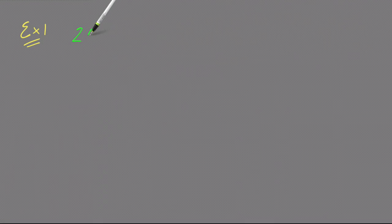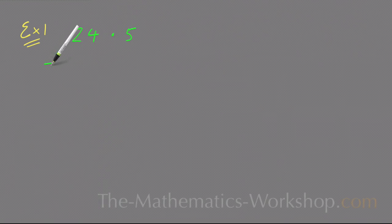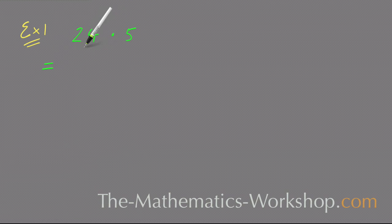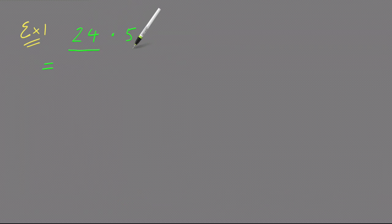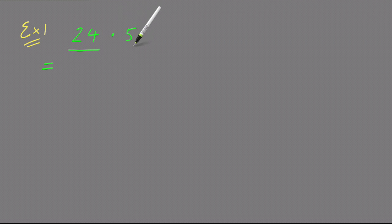Welcome to this lesson on how to round decimal numbers to the nearest whole number. In this first example I'm going to round 24.5 to the nearest whole number. The whole numbers are always the numbers on the left of the decimal point, and the decimal numbers are the numbers on the right of the point. To round to the nearest whole number I need to get rid of the point and the five, after deciding whether to round that four up or keep it the same.